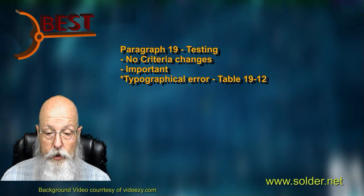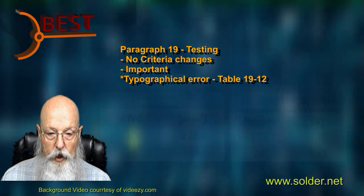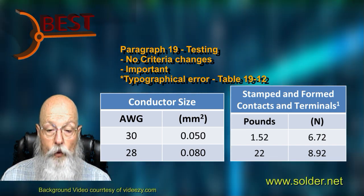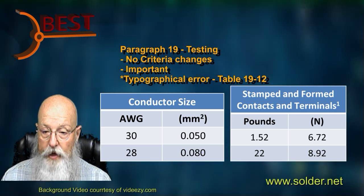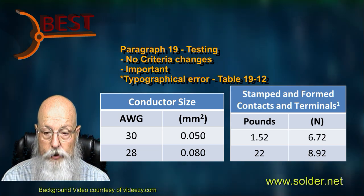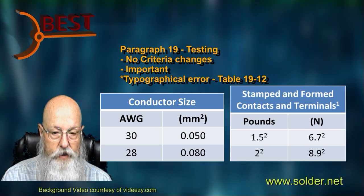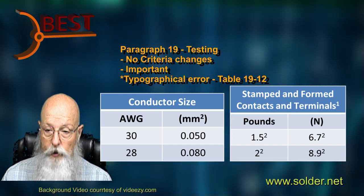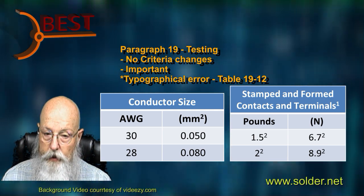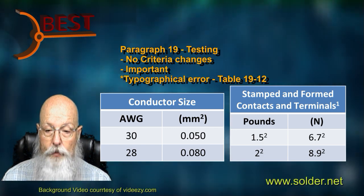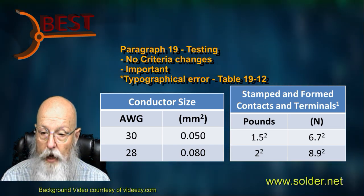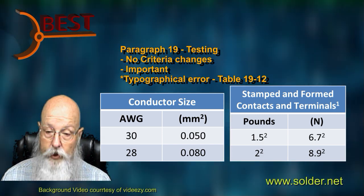An important typo to note is in paragraph 19, Testing. Table 19-12 has some misformatted superscript numbers that change the requirements for the 30-gauge and 28-gauge wire pull force testing. The force limit for 30-gauge wires is currently shown as 1.52 pounds or 6.72 newtons, but the last two digits in both statements should be a superscript number 2 referencing a note in the table. More significantly, for the 28-gauge wire the table shows a limit of 22 pounds and 8.92 newtons, where again the final two should be superscript. When corrected, the value for 28-gauge wire goes from 22 pounds down to 2 pounds — a very big difference. This error has been submitted to IPC for update, and if your company uses this table, it is a very important typo of which to be aware.